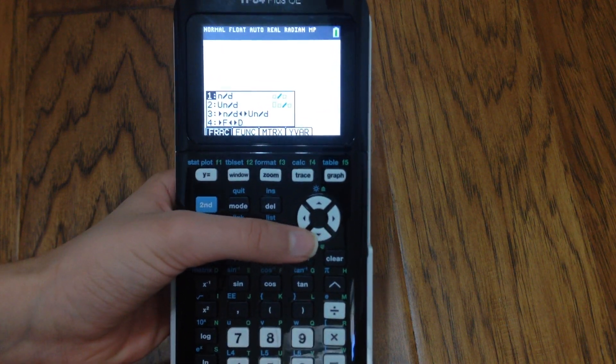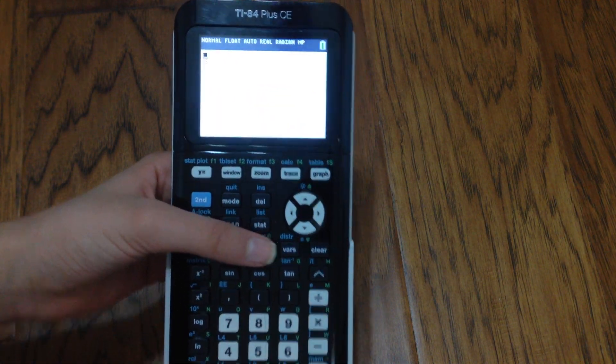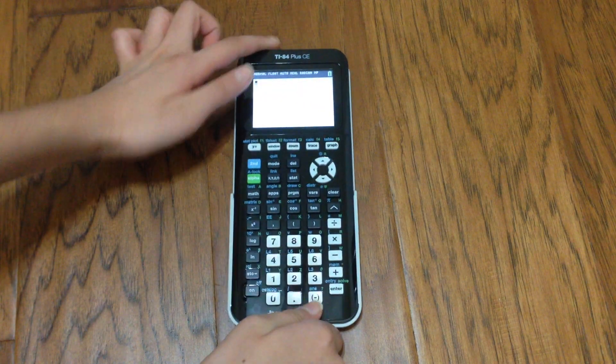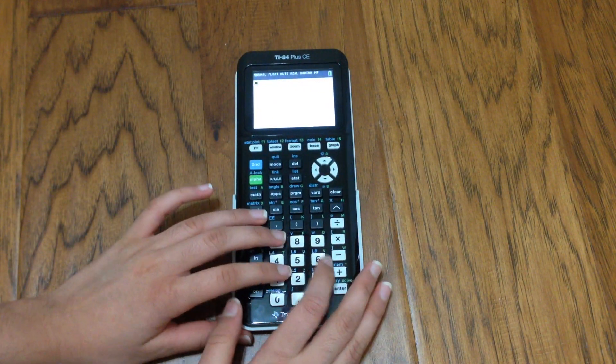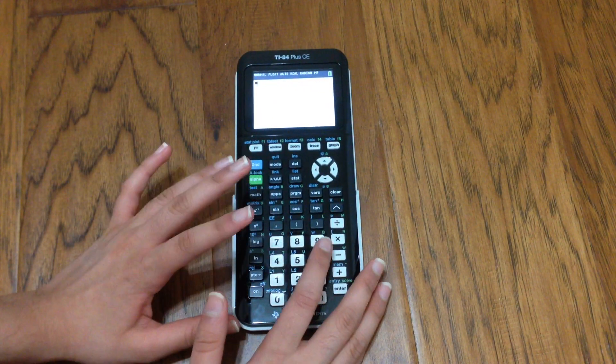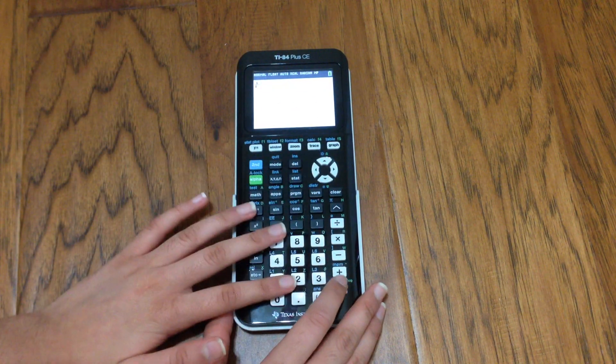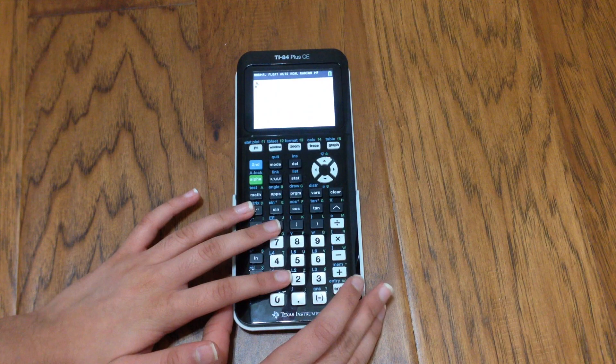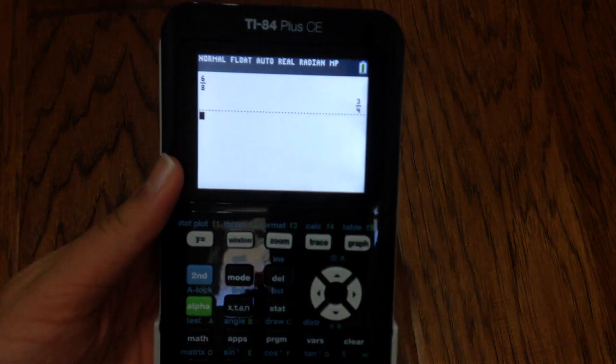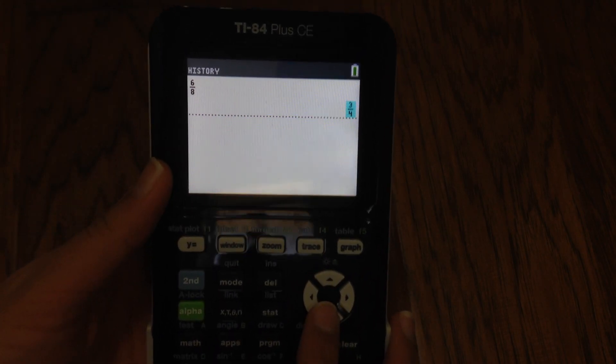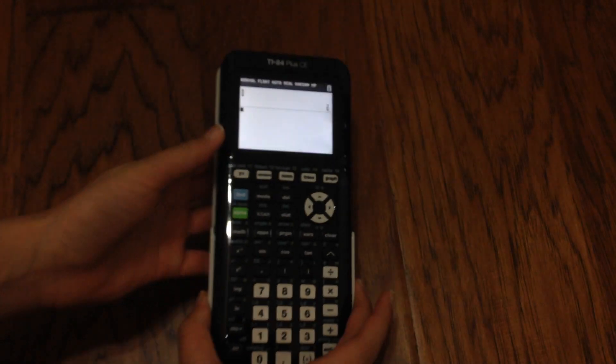So what we're going to do first is click 1, and it pulls up a little template for us as you can see here. We're going to plug in a random fraction - I'm going to go 6 over 8. And when we click enter, it'll actually reduce the fraction or simplify the fraction.